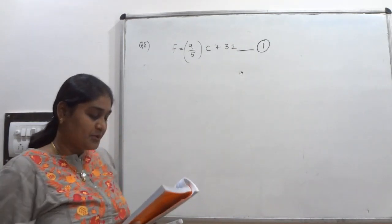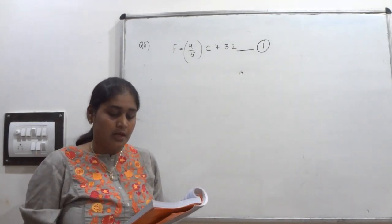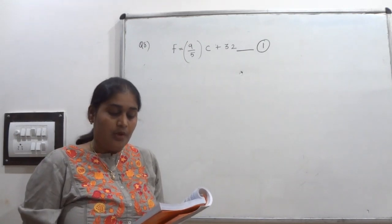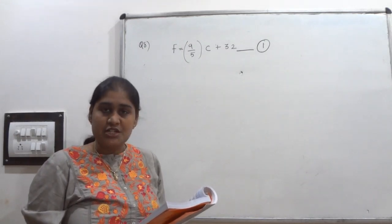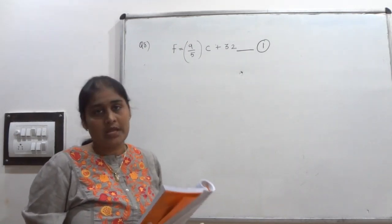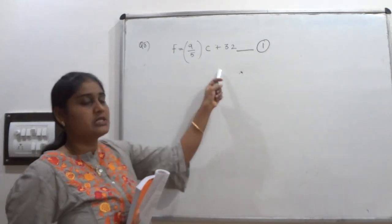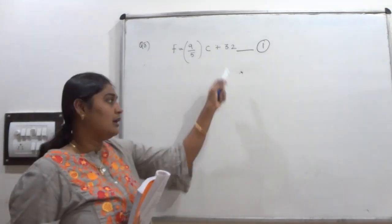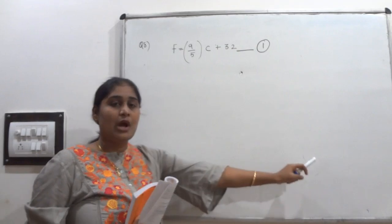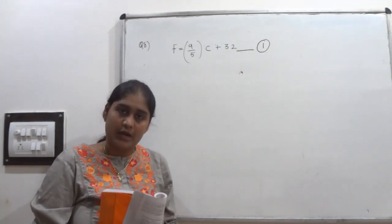First option: draw the graph of the linear equation above, using Celsius for the x-axis and Fahrenheit for the y-axis. That means you have to draw the graph for this equation, taking Celsius on x-axis and Fahrenheit on y-axis.